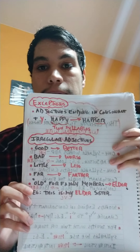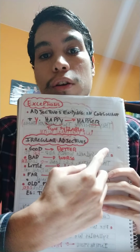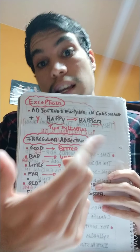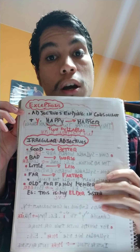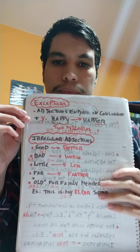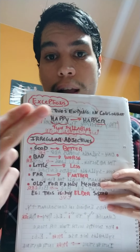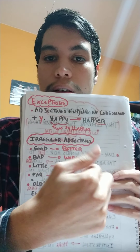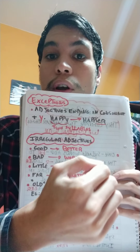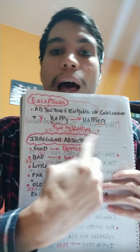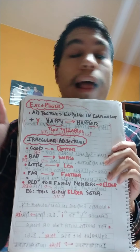Exceptions: adjectives ending in consonant plus Y. Los adjetivos que terminan en consonante más Y — hay una excepción. Algunas palabras que no agregamos 'more'. Por ejemplo, happy tiene dos sílabas, pero en este caso lo usamos con el comparativo sin more. Sería happier — le cambiamos la Y por la I latina y agregamos ER: happier.